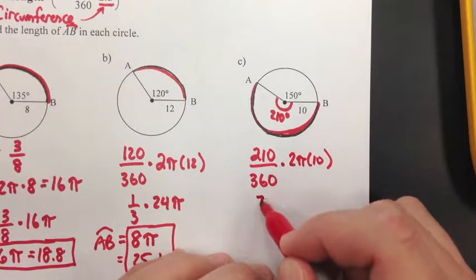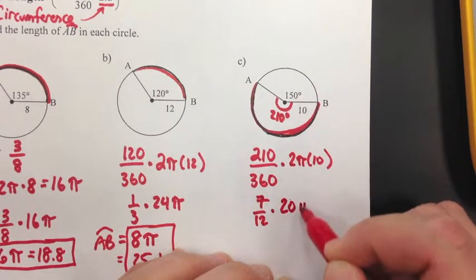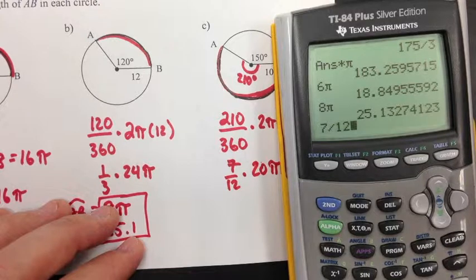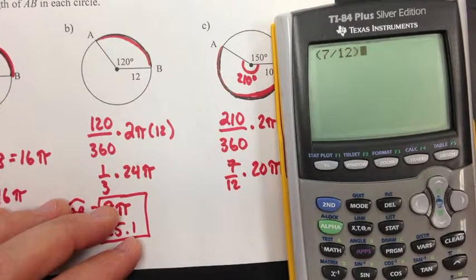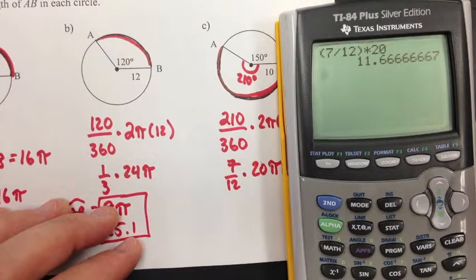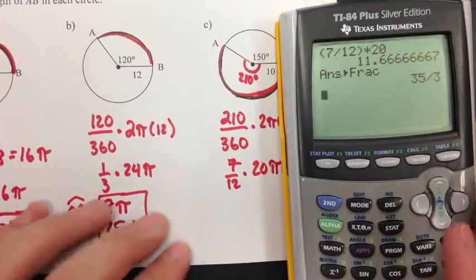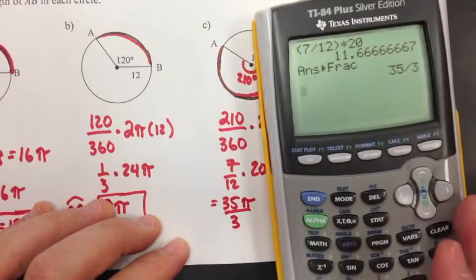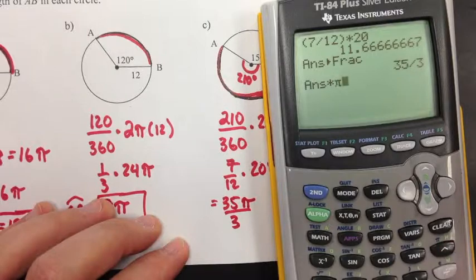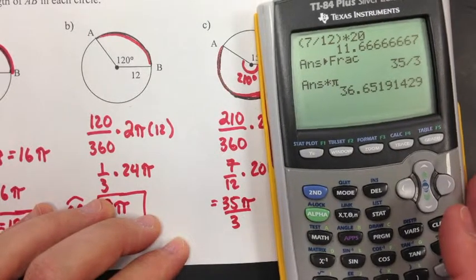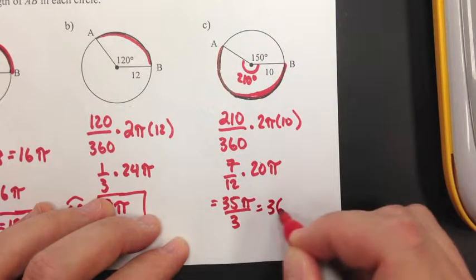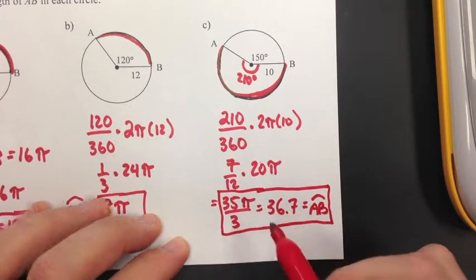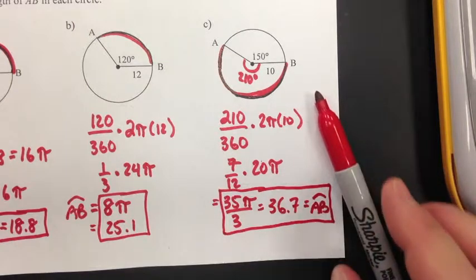The fraction is 7/12 and 2 times 10 is 20 pi. So 7/12 times 20 pi: 7 divided by 12 times 20 is 11.6 repeating, which is 35/3. So the arc length is 35 pi over 3. As a decimal, multiplying by pi gives approximately 36.7. That's the arc length, and that is the end of part two — go ahead and stop this and we'll move on to part three.